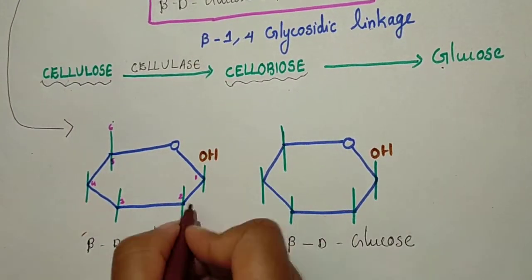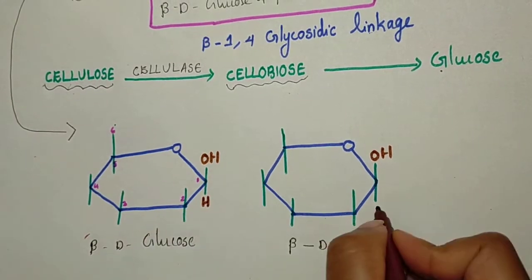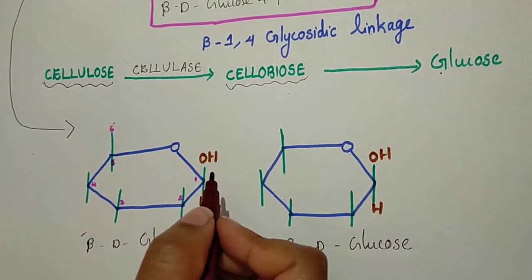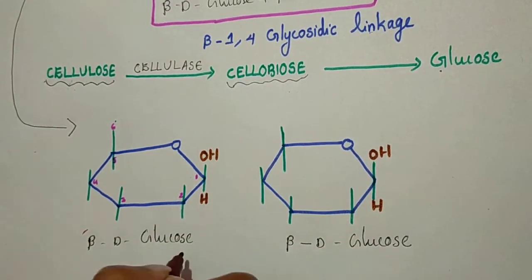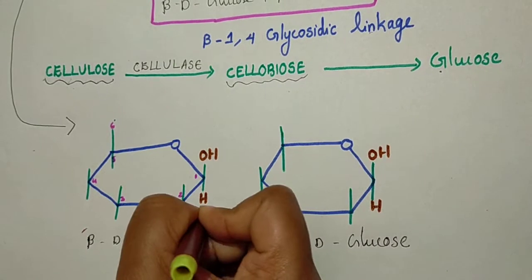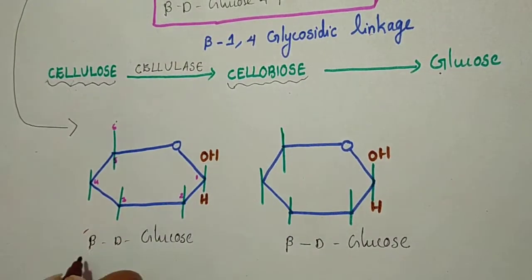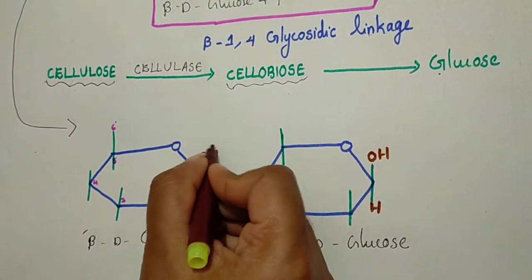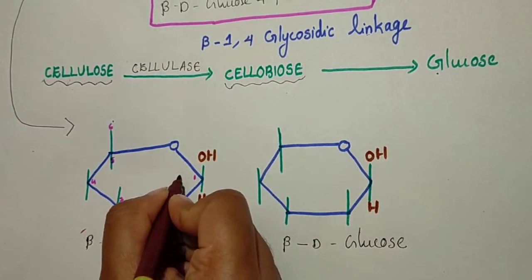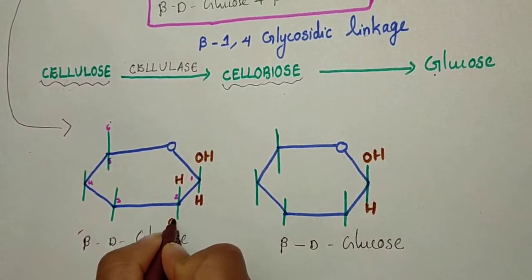If OH is in the top, hydrogen will come in the bottom. This is the major difference between beta-D-glucose and alpha-D-glucose. In case of alpha-D-glucose, OH will come in the bottom; in case of beta-D-glucose, OH will come in the top. The remaining we can fill easily: H, OH,